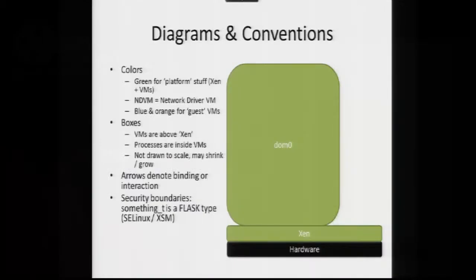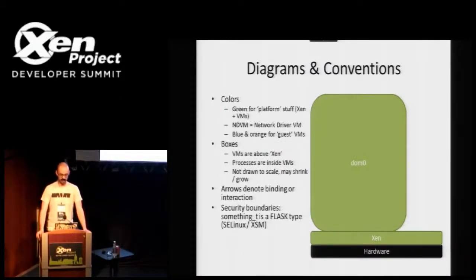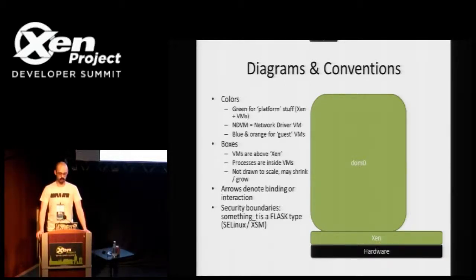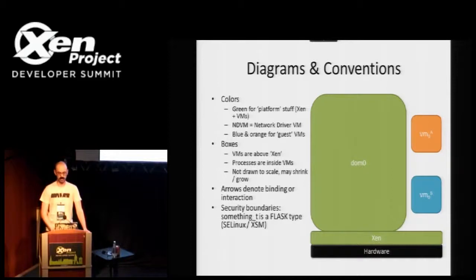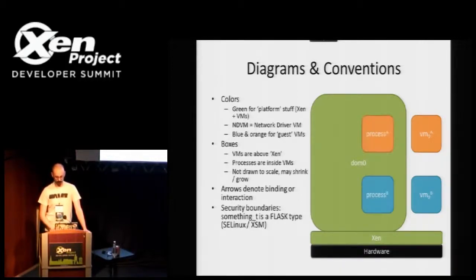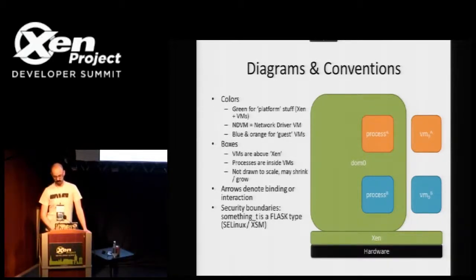Just to get some conventions out of the way: I have animated slides throughout. The hardware is at the bottom of the stack. Xen and Dom0 are largely part of the platform — I'm adopting a green color for that. Other boxes that pop up are other virtual machines. Colors represent the interests of the same or different organizations. White boxes with dashed borders and the underscore T convention denote a type — this is SELinux speak for a specific security container. Arrows represent communication channels.